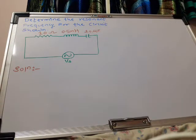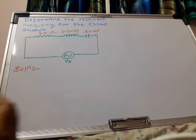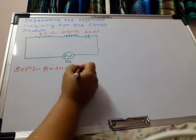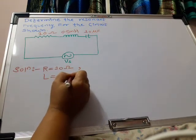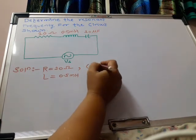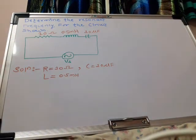A simple numerical problem with resonant frequency formula. We are provided with a circuit containing three elements: resistance with 10 ohms, inductance value with 0.5 millihenry, and capacitance value equal to 10 microfarads. We are asked to calculate the resonant frequency for the given circuit.